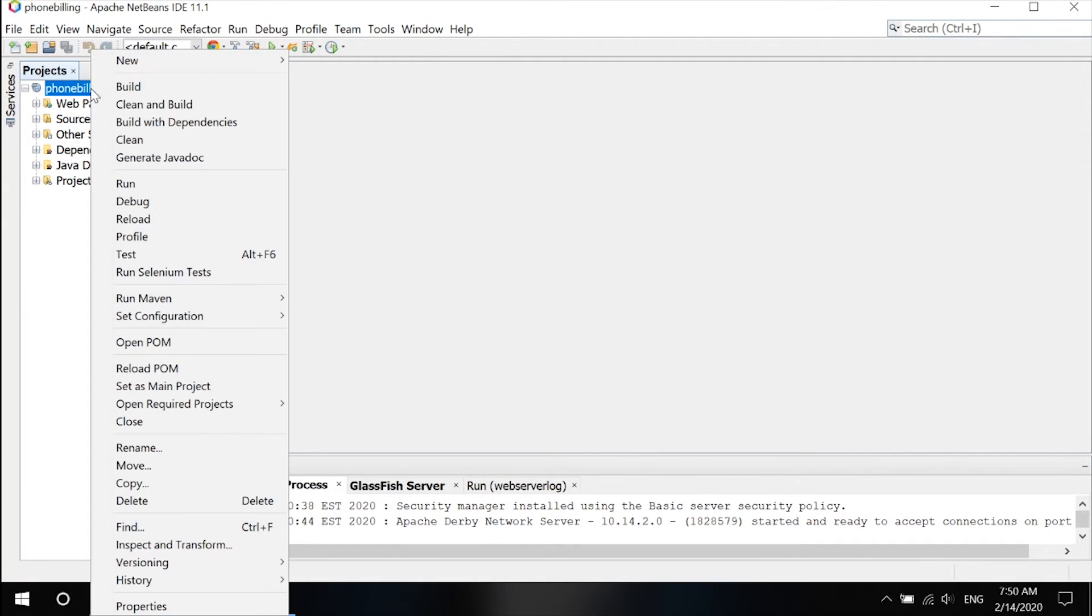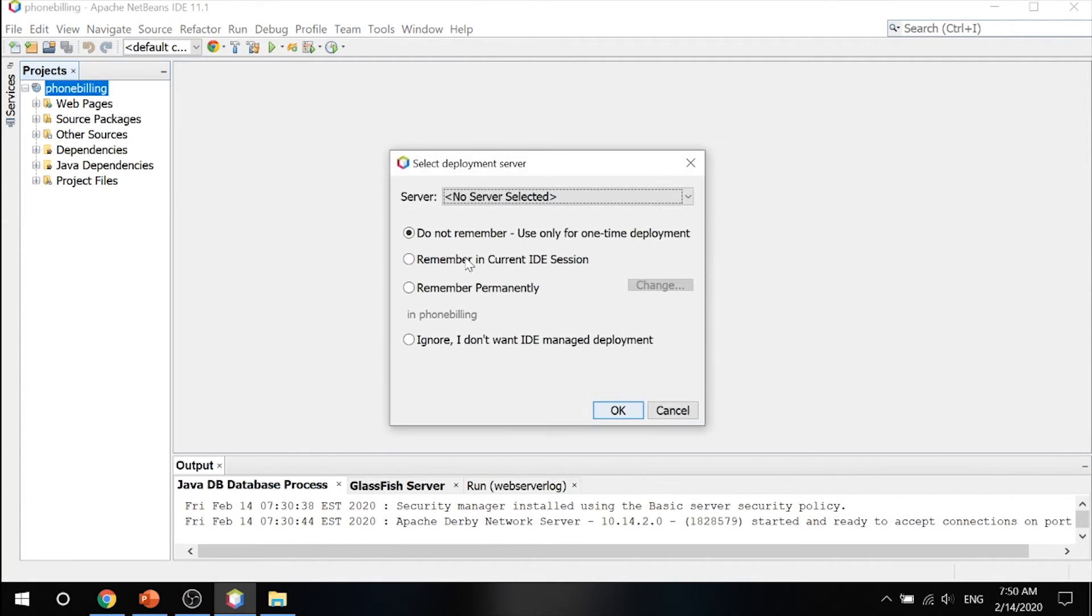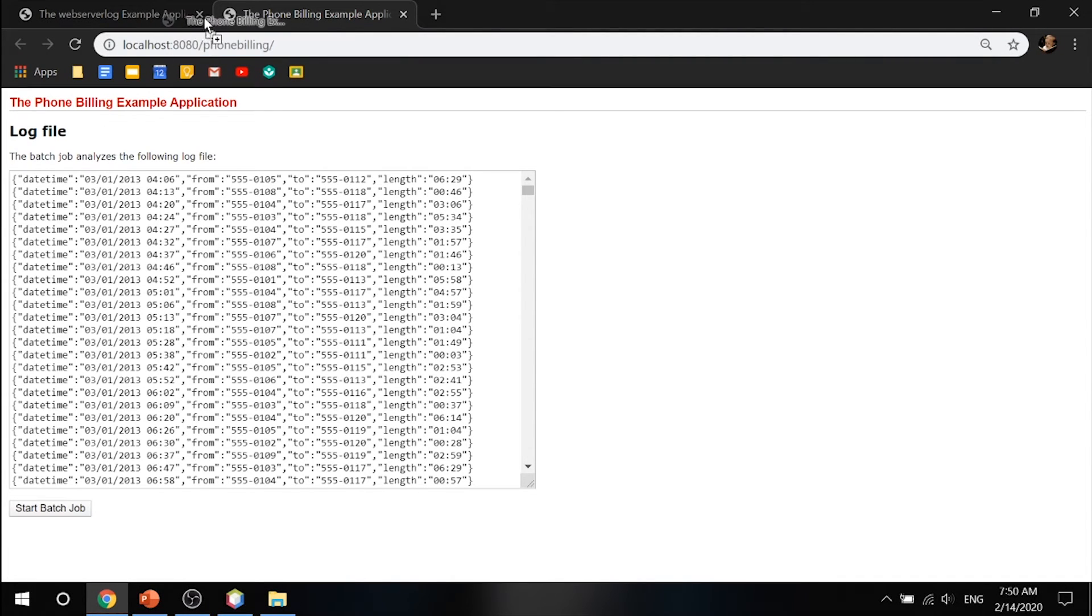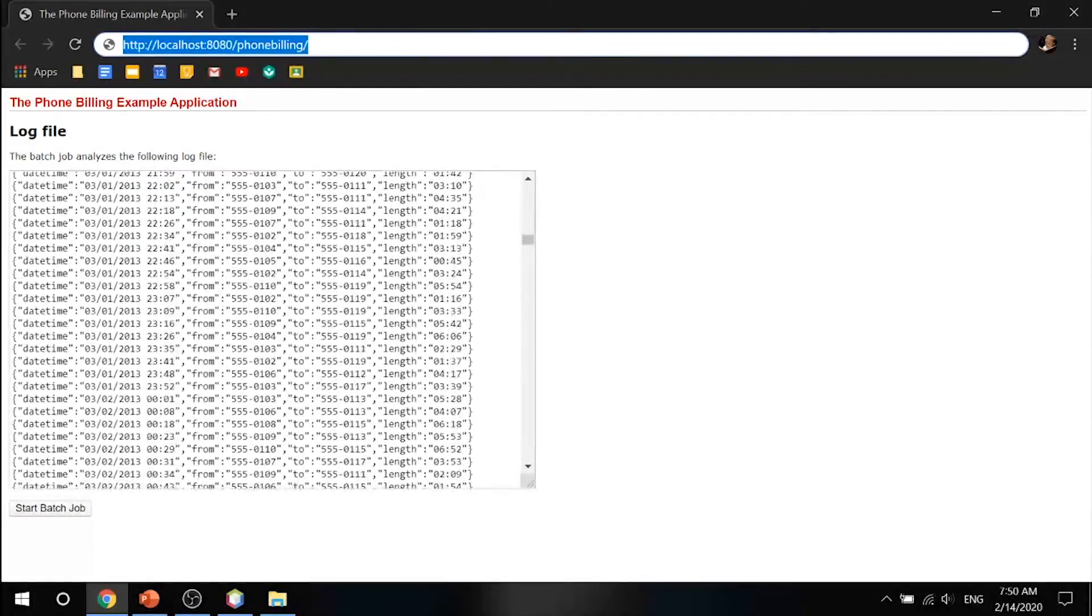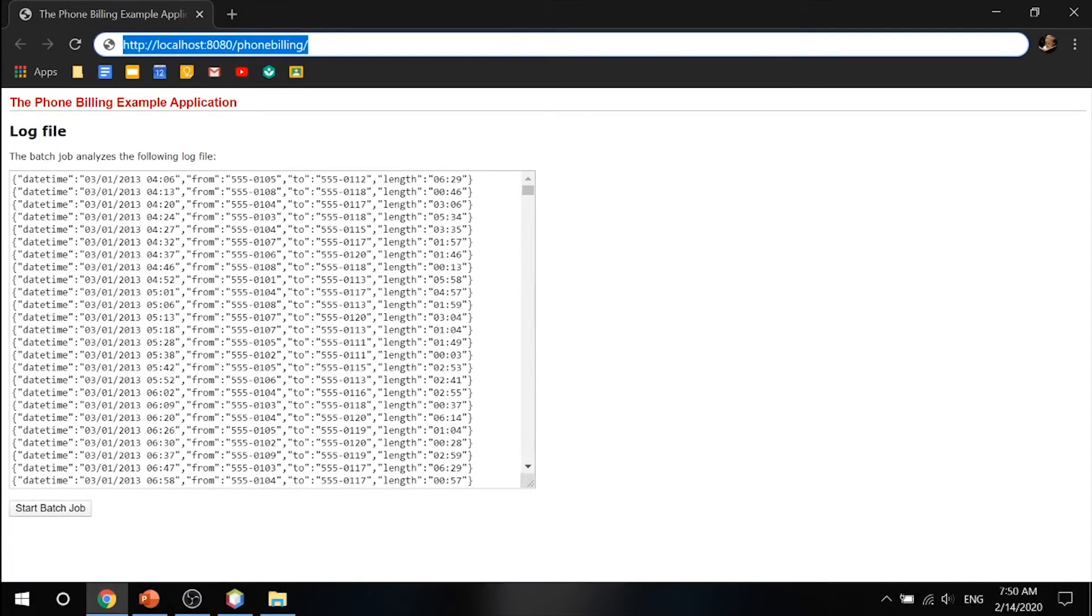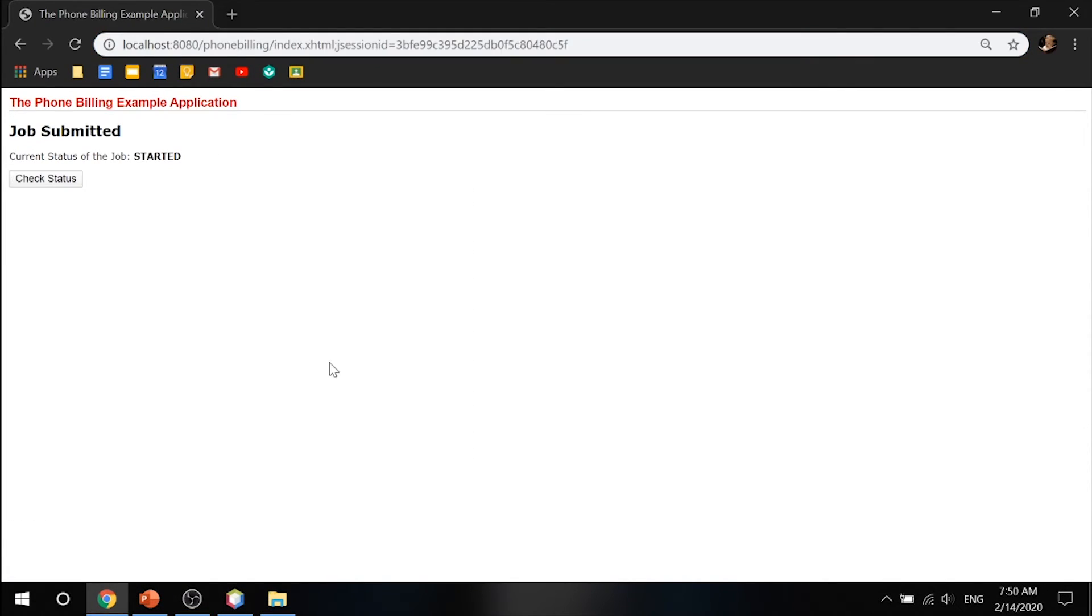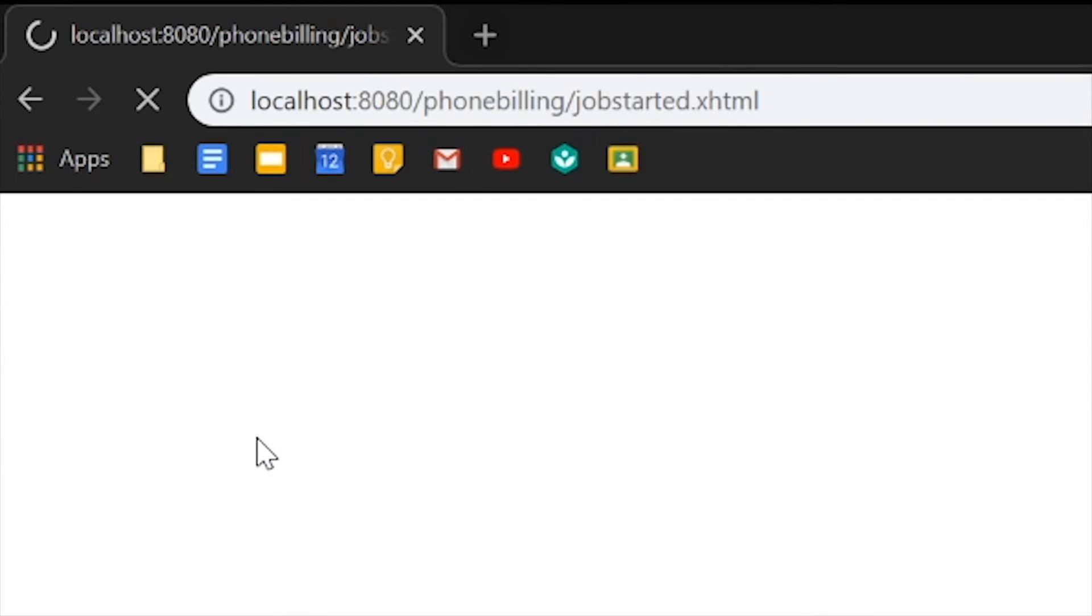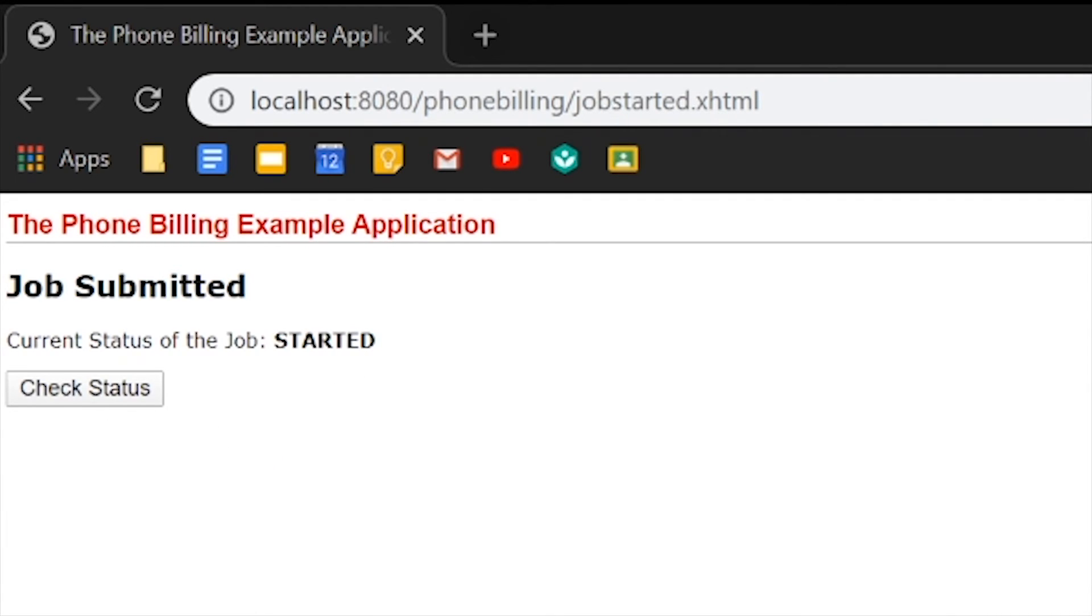So now that it's up, let's go ahead and click on run. Go ahead and select your GlassFish server again. And now what it should do is you have our log file over here. You can see all the date times and stuff. And what it does is you can go ahead and start your batch job. It started. Let's check the status. Still started. Check the status again.